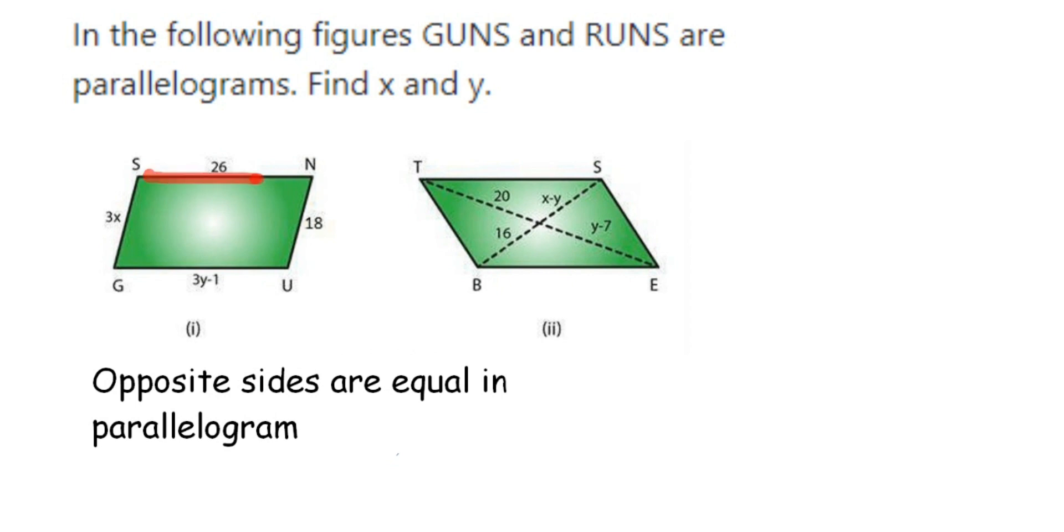First I'm going to write down SG is equal to NU. SG value is 3x, so 3x is equal to 18. We want the value of x, so transpose 3 to the other side. X will be equal to 18 divided by 3. Cancel them: 3 into 6 is 18, so therefore x is equal to 6.